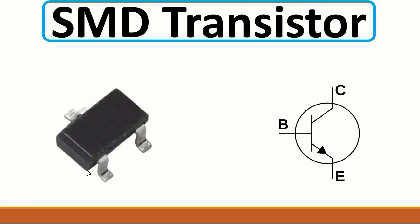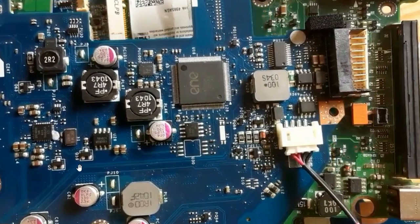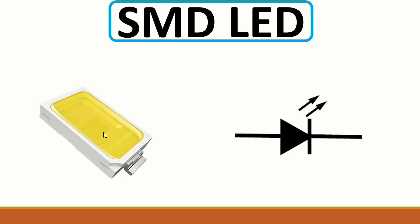Then we have the transistor — the SMD transistor is mounted on the motherboard surface. It has base, collector, and emitter. Always remember: base, collector, emitter. On the motherboard, the reference 'Q' is used for the transistor. You can also find MOSFETs with the same shape and same terminals. Here also we have a transistor.